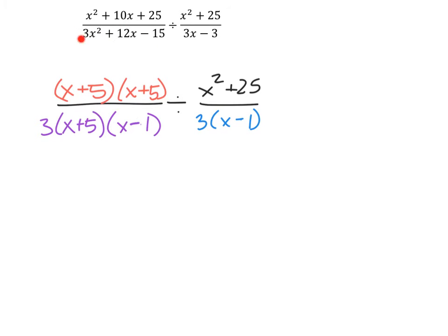And then I've factored out first the three from these three terms, 3x squared plus 12x minus 15. So that's where this 3 comes from, and then I factored what was left to x plus 5 times x minus 1.